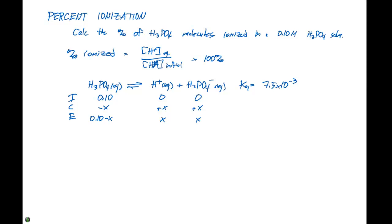We need to find the equilibrium concentration of H+, so x is what we want to solve for. Our Ka equals x times x divided by 0.10 minus x, which equals 7.5 times 10 to the minus 3.